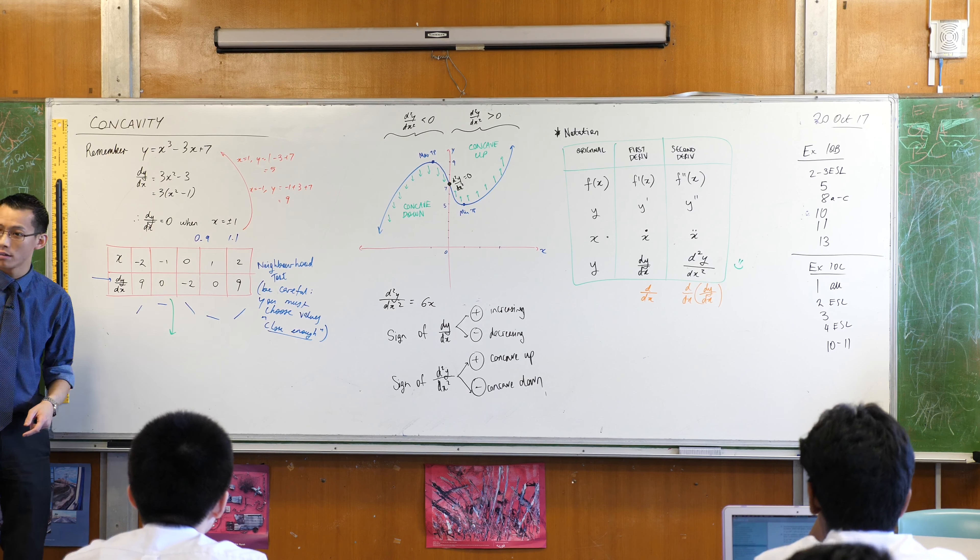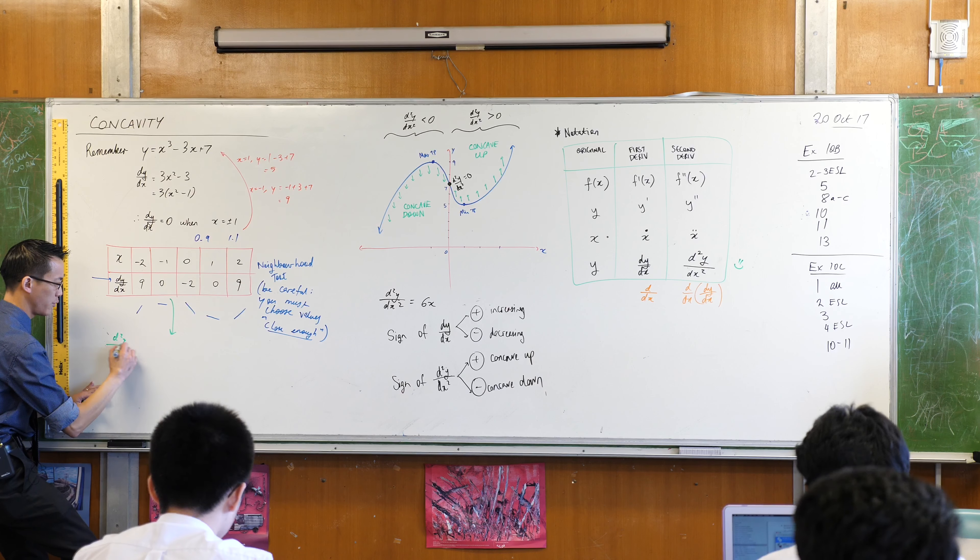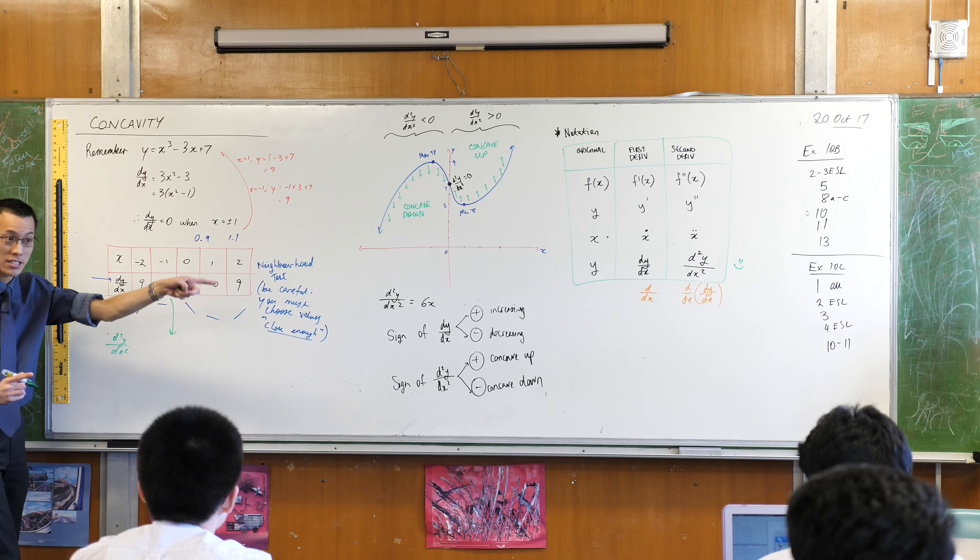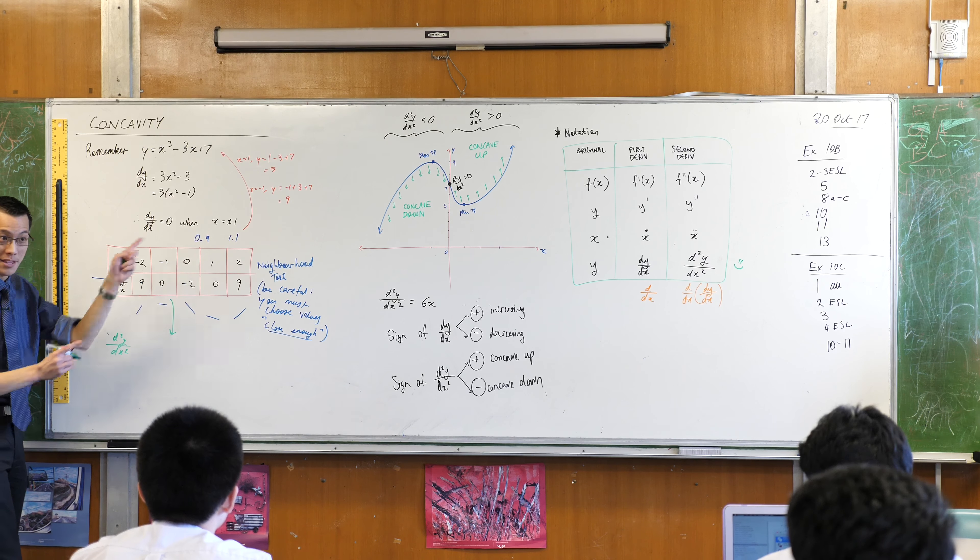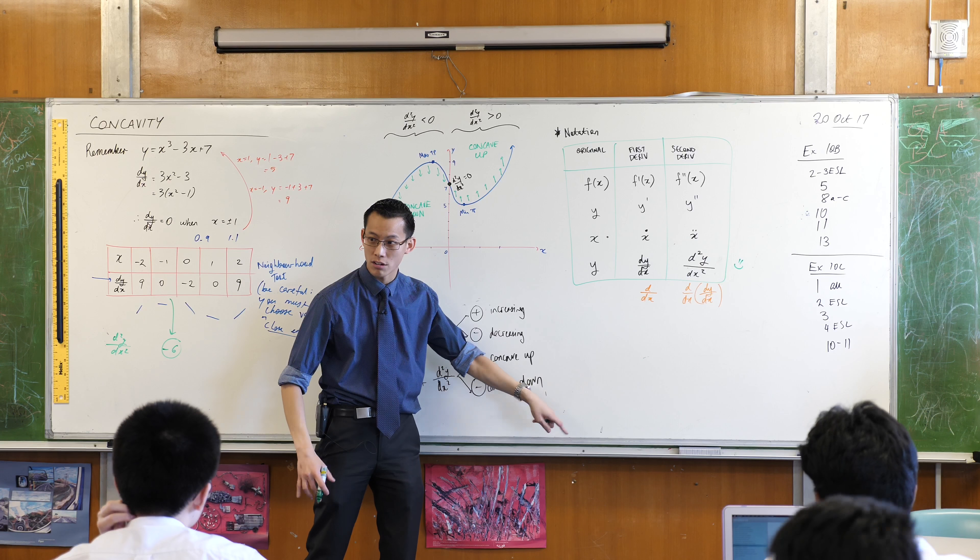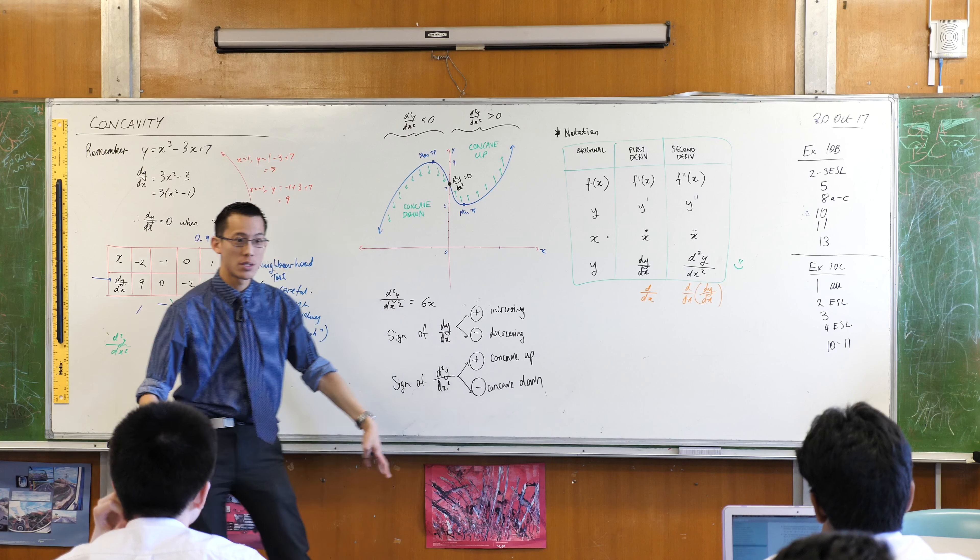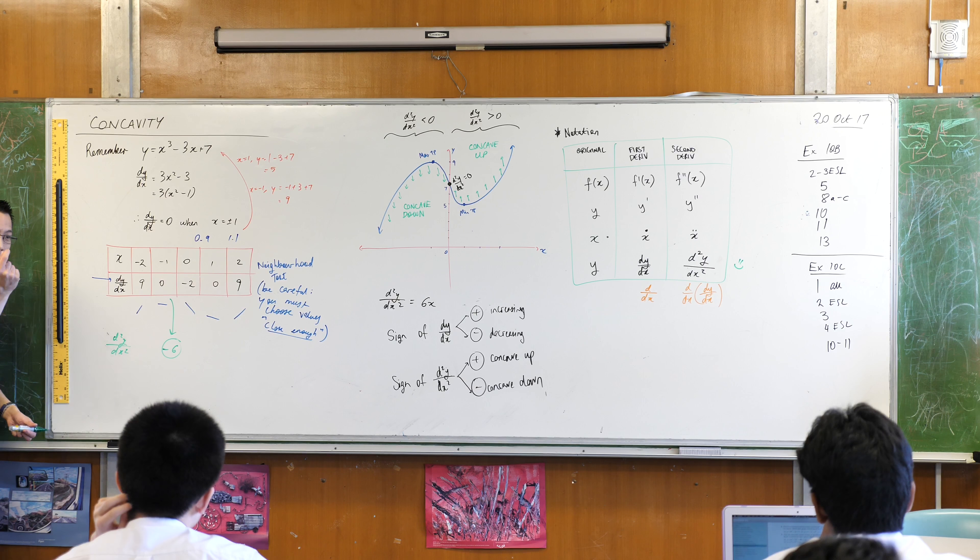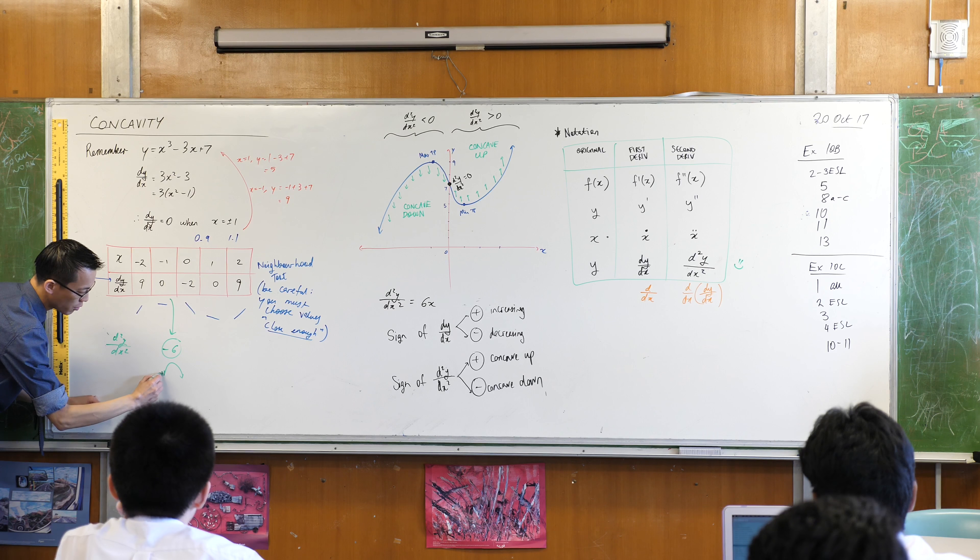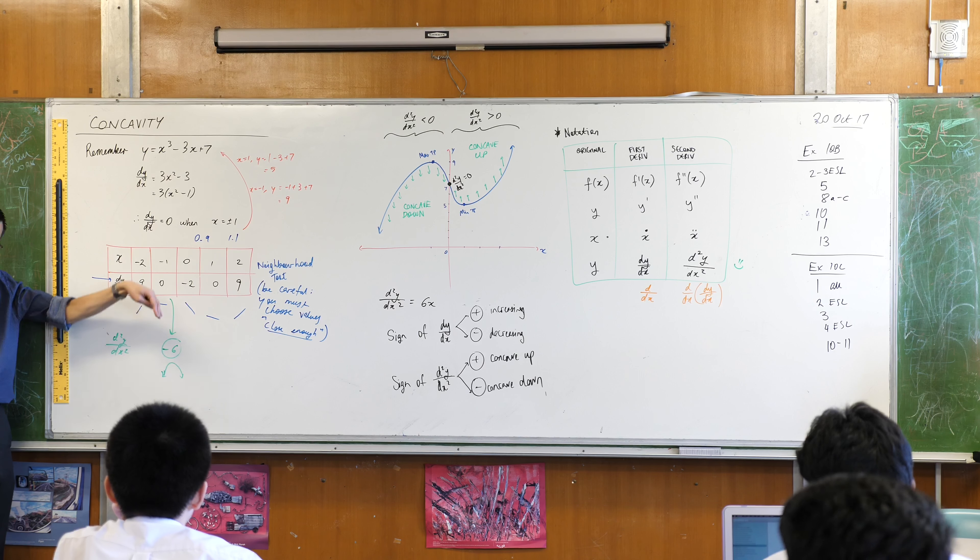when you put in x equals negative one into the second derivative, what do you get? Like, what's the actual value? Well, yes, six times negative one, that gives you negative six, okay? But wait, the sign of the second derivative, if it's negative, that means you're concave down, concave down, you're facing downwards. So that tells you, in one hit, rather than going to the left, it's going to the right, that tells you, oh, that's a maximum. Do you see that? You see how it's concave down?